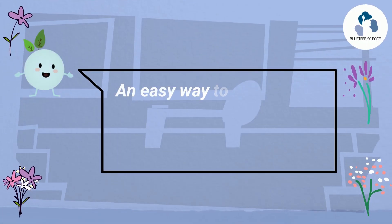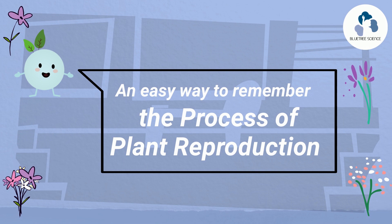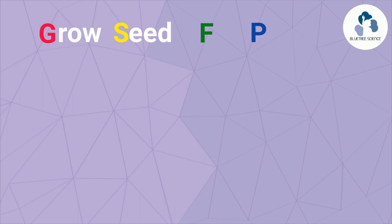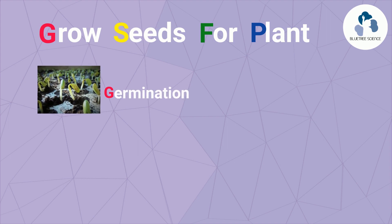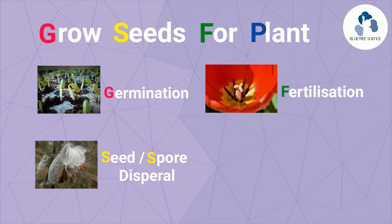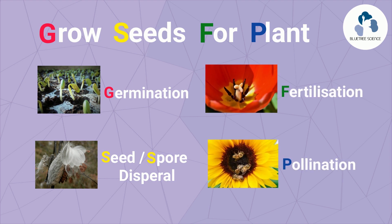Here is an easy way to remember the processes that plants undergo to reproduce. Just remember the first letter of each word of this sentence: Grow seeds for a plant. G for germination, S for seeds or spores dispersal, F for fertilization, and P for pollination.